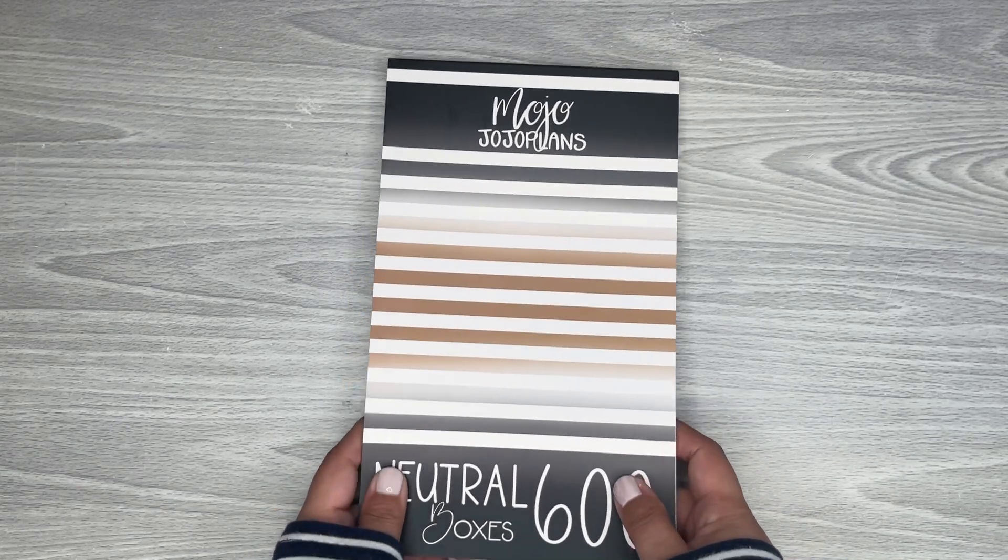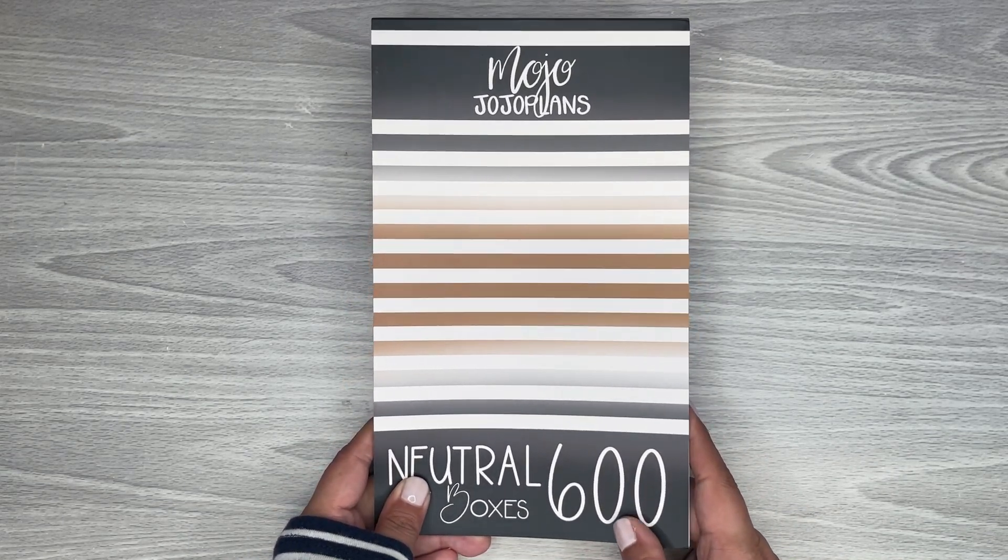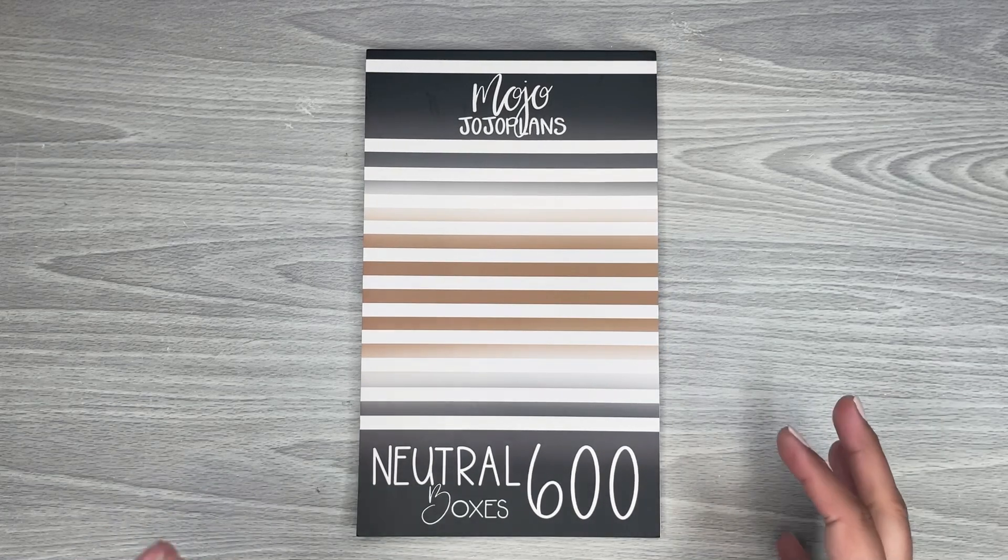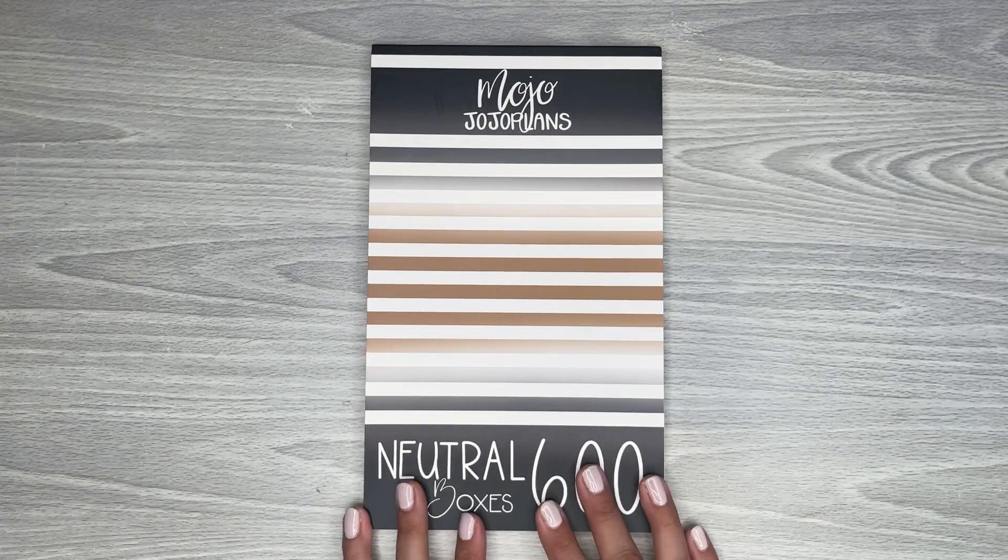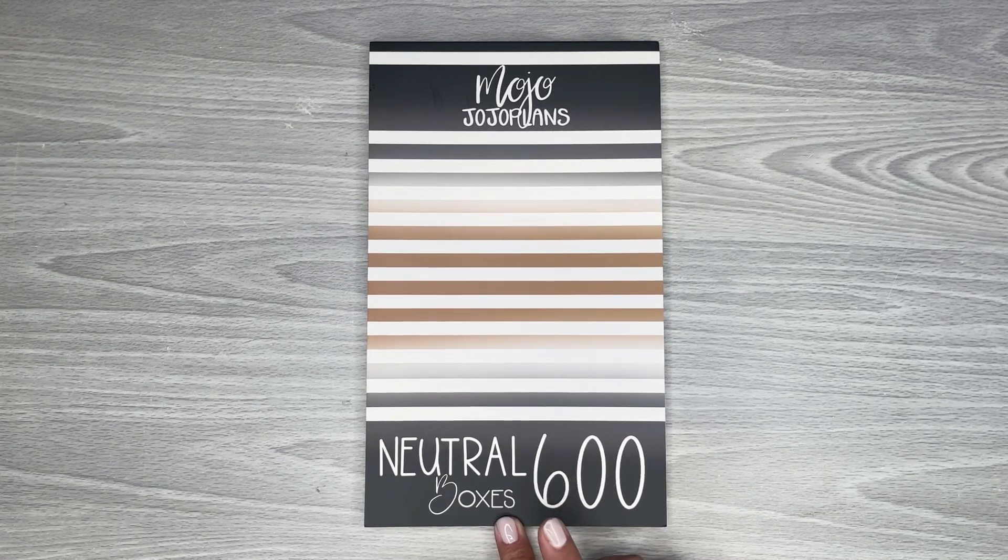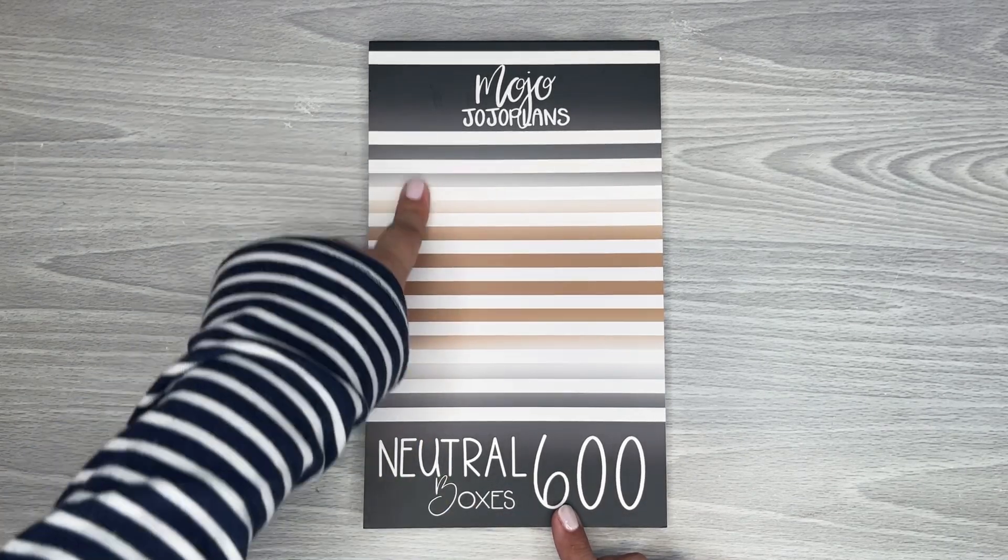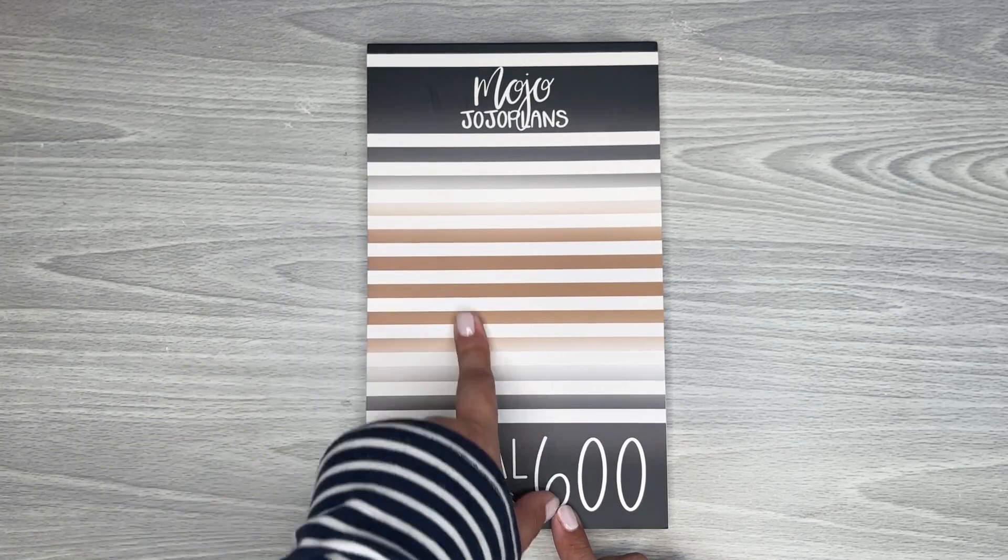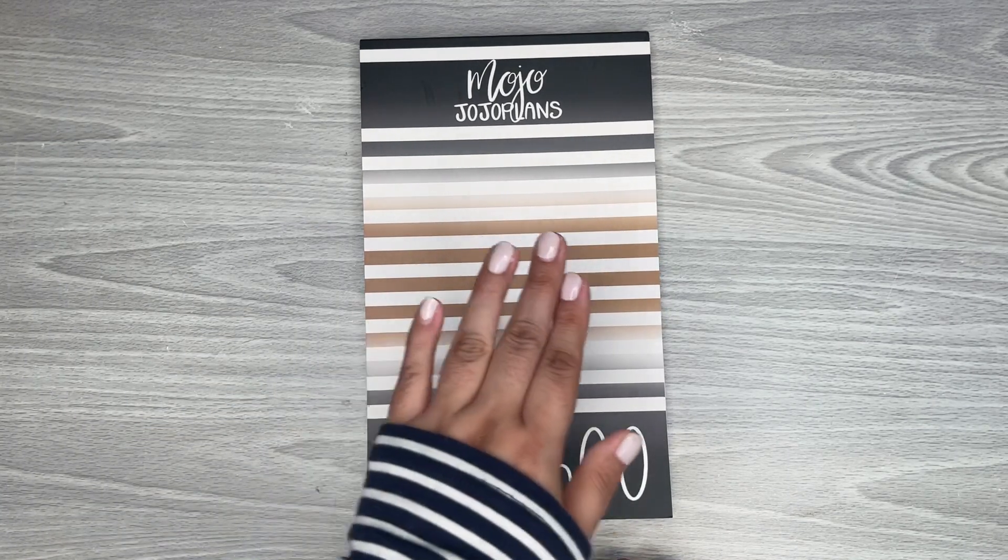As you can see, I have a new sticker book from the awesome Jojo from Mojo Jojo Plans. She sent me her newest boxes sticker book. This one is Neutral Boxes. There's 600 pieces in here and the cover shows all the different awesome colored boxes that are going to be in here.